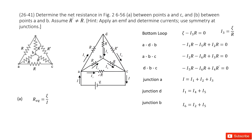First of all, we look at the bottom loop. This is the epsilon. This battery increases the voltage, and then we go through the resistor R — the voltage decreases by I3 times R — and then equal to zero, coming back to the origin point.